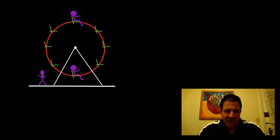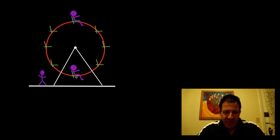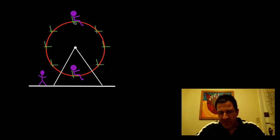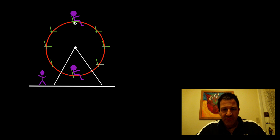Here the person is standing still, so the normal force is exerted by the floor or the surface on the person. Here the person is going round and round on the Ferris wheel, and we want to know what is the normal force exerted by the seat on the person for each of these two locations. That's the goal — three normal forces.